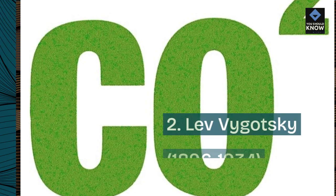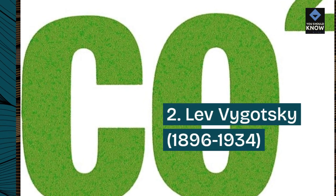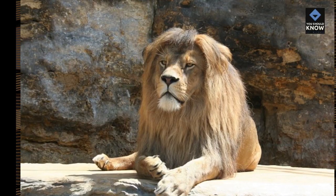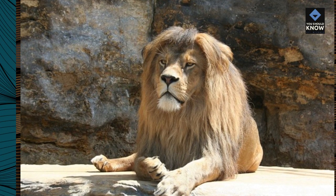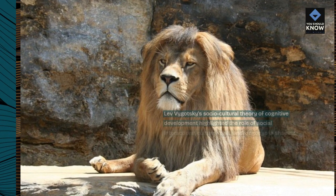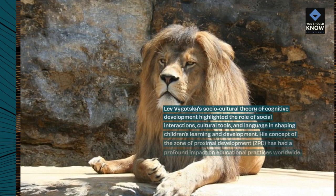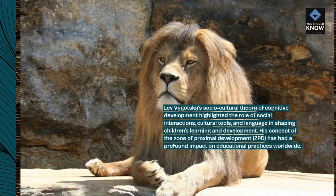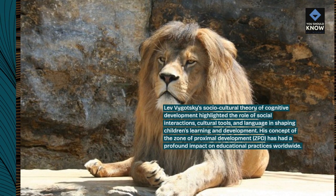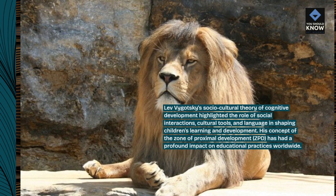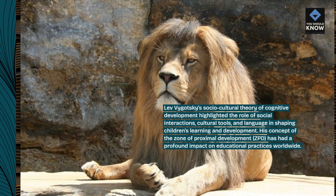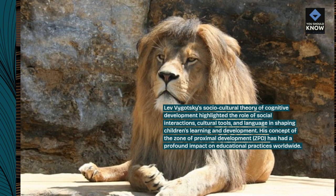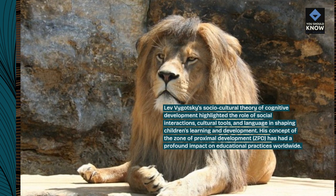2. Lev Vygotsky, 1896–1934. Lev Vygotsky's socio-cultural theory of cognitive development highlighted the role of social interactions, cultural tools, and language in shaping children's learning and development. His concept of the Zone of Proximal Development (ZPD) has had a profound impact on educational practices worldwide.